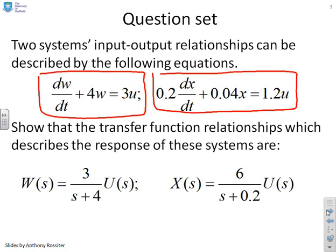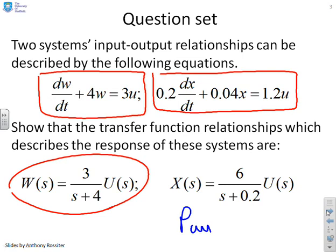In other words, we want you to prove that for the first one you can write W(s), where W(s) is the Laplace transform of w(t) equals 3/(s+4) into U(s). And for the second one, X(s) = 6/(s+0.2) U(s). So now is the time to pause and see if you can prove this to yourself. And I'll now continue with the video and go through some solutions.